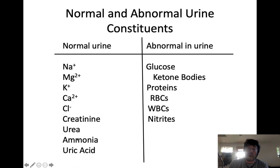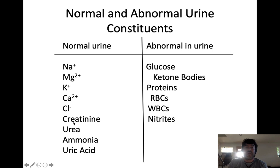Now: normal and abnormal constituents of urine. Normal urinary constituents are things you should find in urine. Ions — even though we reabsorb the overwhelming majority of electrolytes in the filtrate, some still manage to get lost and we have to replace them in our diet. So it's totally normal to find things like sodium, magnesium, potassium, calcium, and chloride in urine.